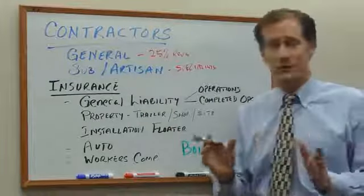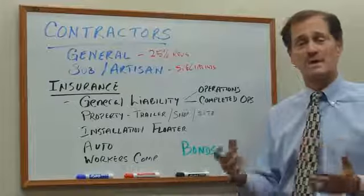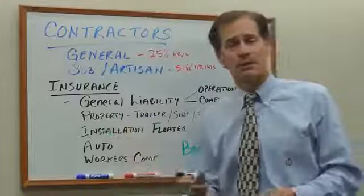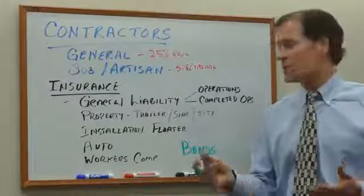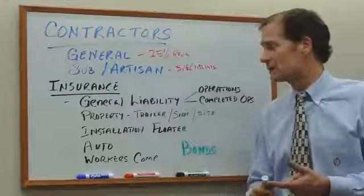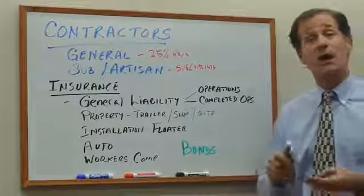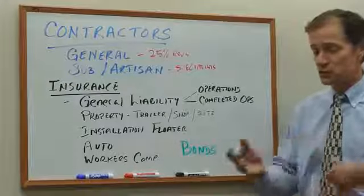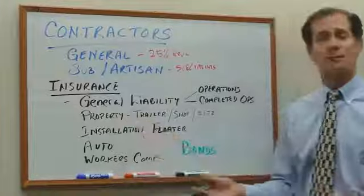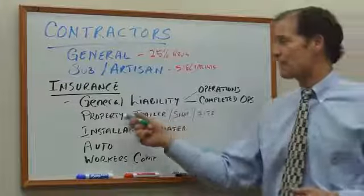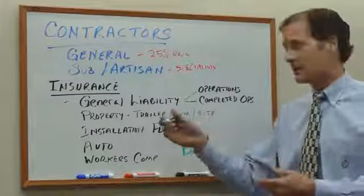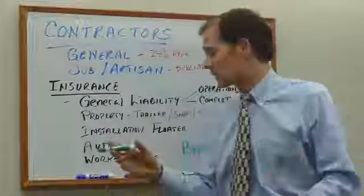General liability provides defense coverage — whether or not you are at fault or negligent, it provides defense coverage. Next is property coverage. This is optional. It depends on your operation and how much value you have in your trailer, at your shop, or on-site. If you just have power tools and hand tools you'll burn through every few years, you can self-insure. On the other hand, if you have expensive tools in your trailer, shop, or site, then you may want insurance for those.